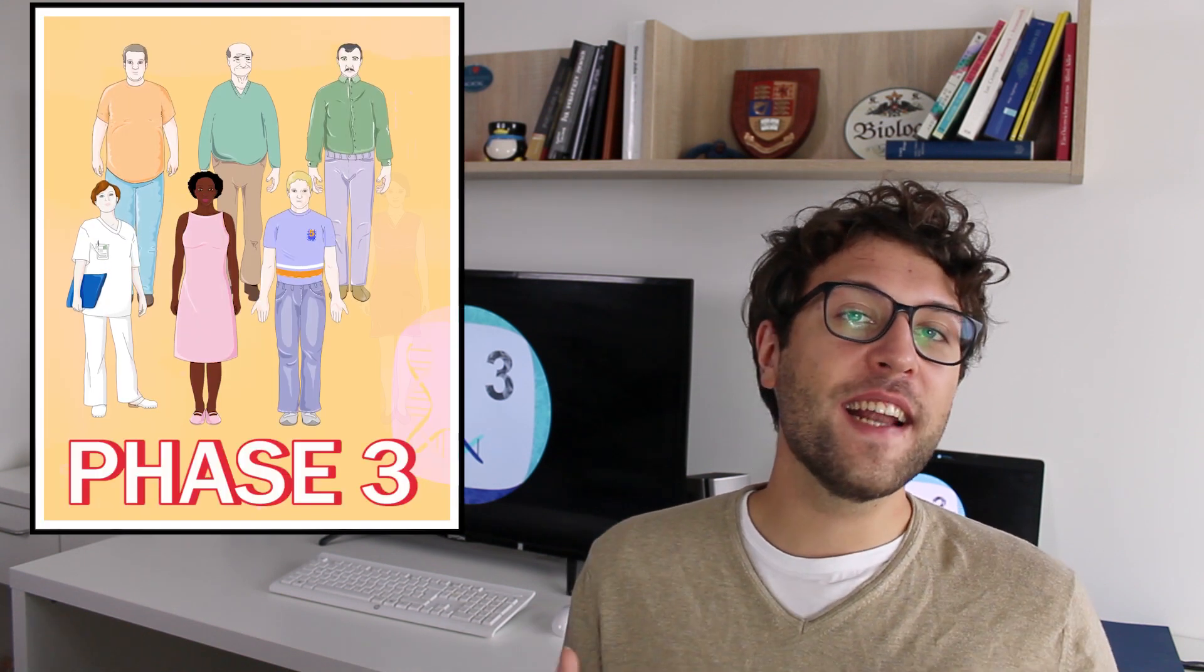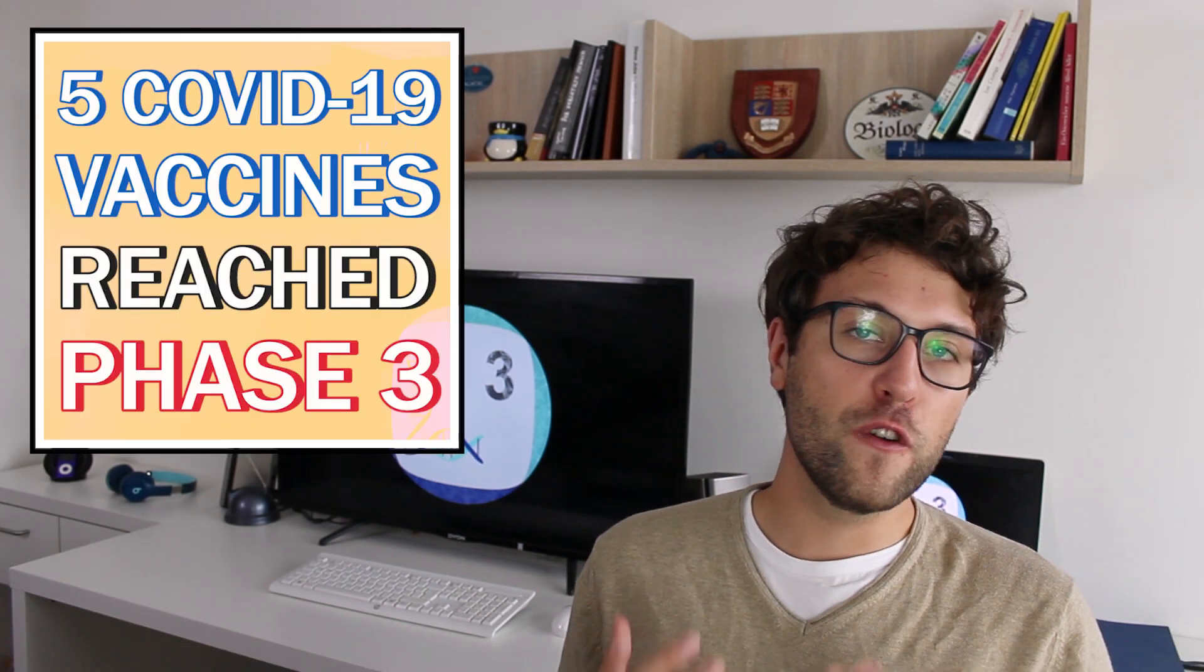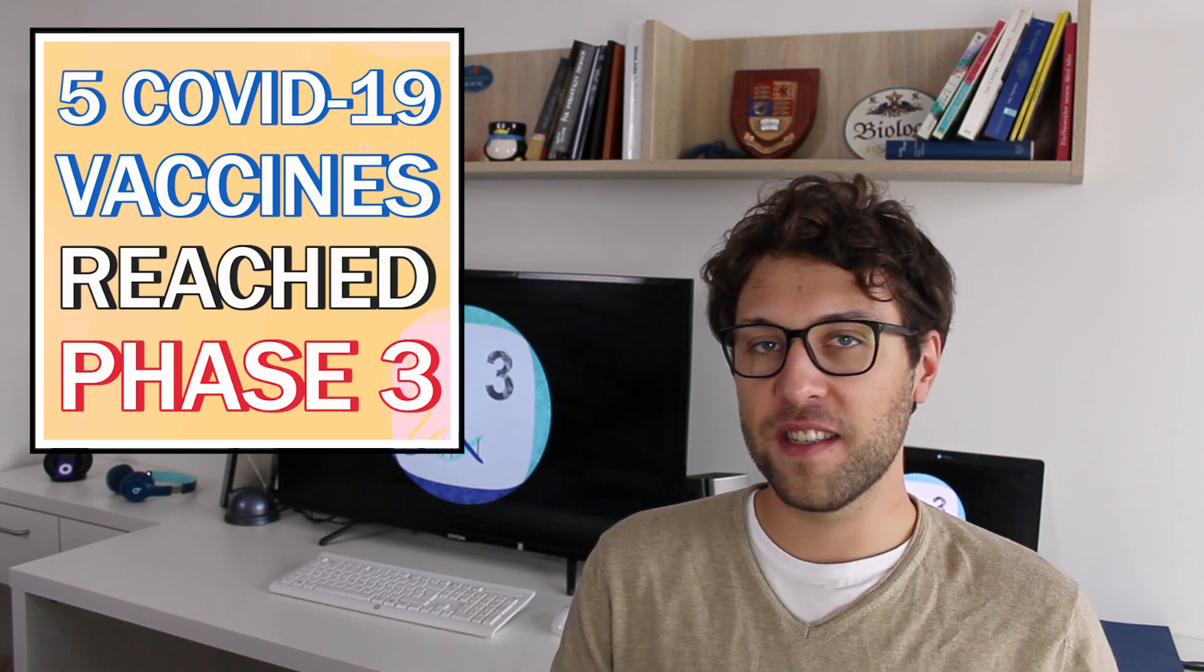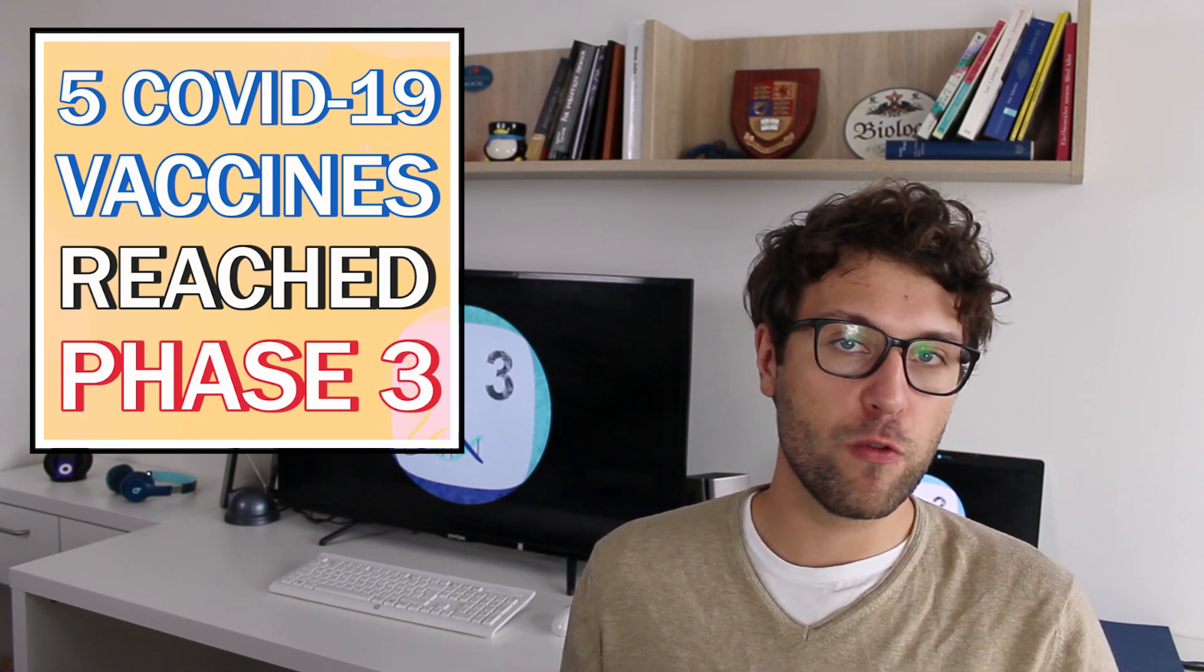If again everything works fine then phase 3 clinical trials can start which can involve thousands of different people. And this normally is the final round of testing before the vaccine is finally approved. As of now October 2020 five different vaccines have been able to be approved for phase 3 clinical trials. So this is how we bring a COVID-19 vaccine to the market.